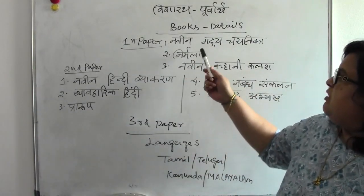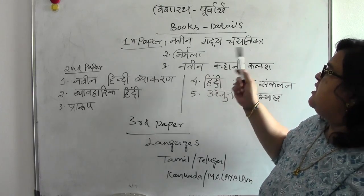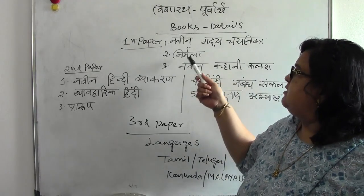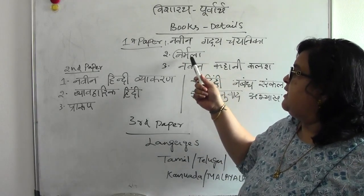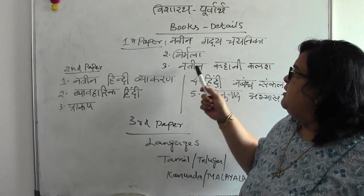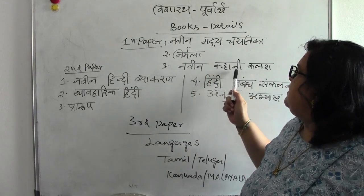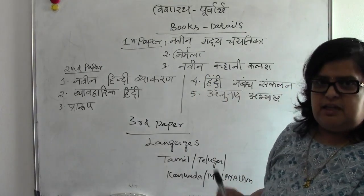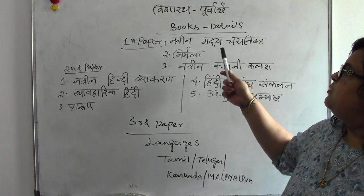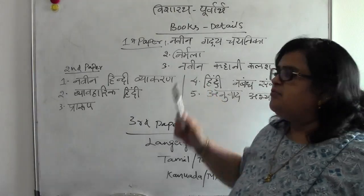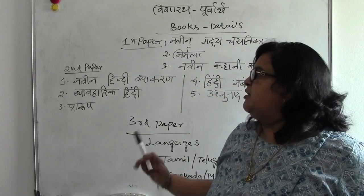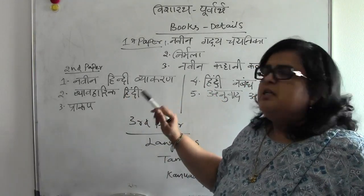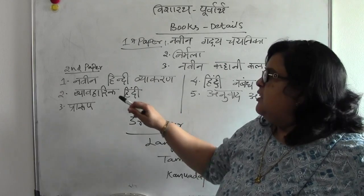First paper is Naveen Gadja Chayni Khandra. Second paper is Nirmala. Third one is Naveen Kahani Kalash. There are three books in the first paper. Second paper is Naveen Hindi Vyakaran Grammar Pathy.